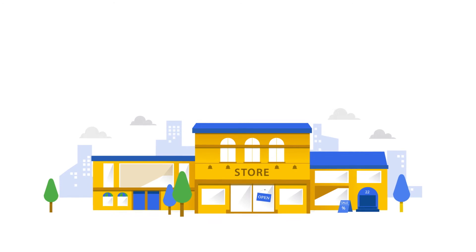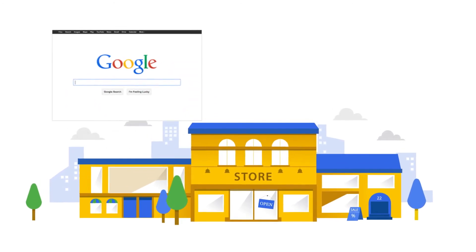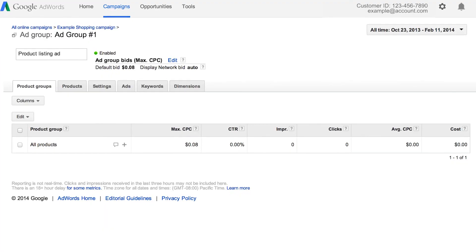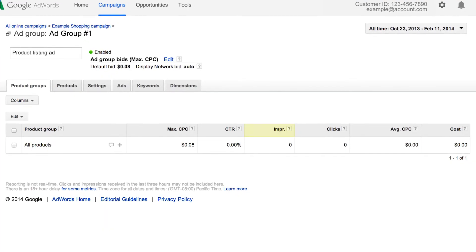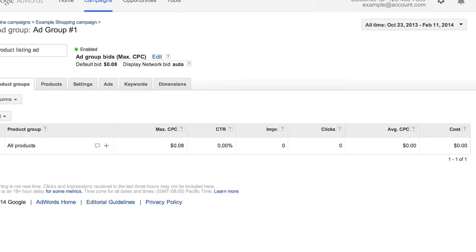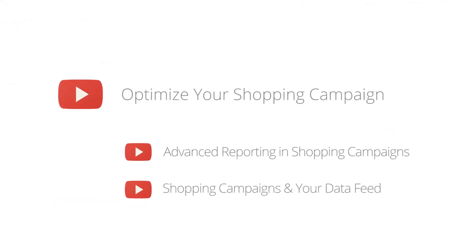And that's it! You've just created a shopping campaign and are now advertising your products on Google.com and Google.com/shopping. Over time, your performance data — like impressions, clicks, and costs — will populate here as well. To learn about how to create new product groups with corresponding bids and further optimize your shopping campaign, check out the next video in our tutorial series.